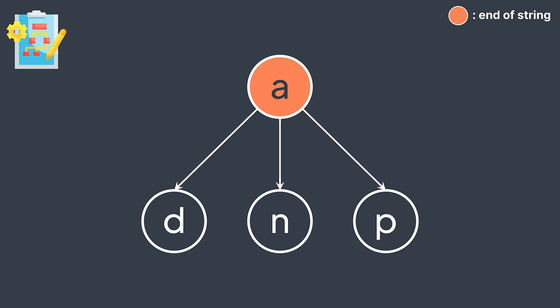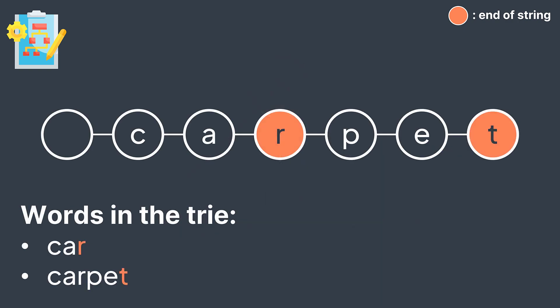For example, when we have both 'car' and 'carpet', we have to set the boolean on the node R to true to indicate that 'car' is a word. Otherwise, we would only have the word 'carpet' in the trie.